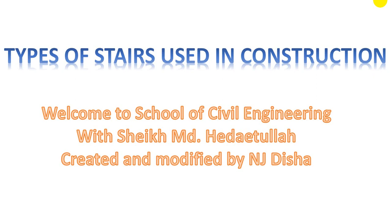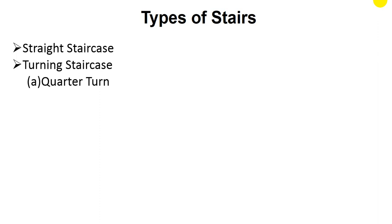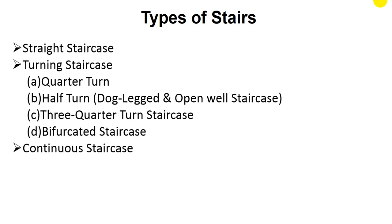Here are the types of staircases available in construction. First is the straight staircase, then turning staircases, which are again divided into quarter turn, half turn, dog leg, and open well staircase. After that, three-quarter turn staircase and continuous staircases such as circular staircase, spiral staircase, and helical staircase.